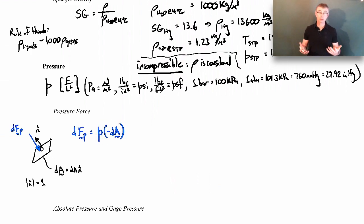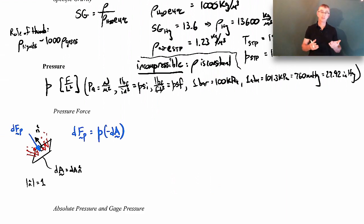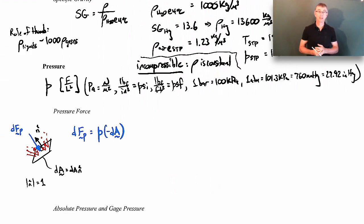Why does pressure act inward? Because you have molecules bouncing against the surface. Air molecules are constantly moving and when they impact the surface there's a momentum exchange — a force from the wall acts on the molecules, and by Newton's third law the molecules exert an equal and opposite force on the wall. It's the same idea as holding a shield while someone throws tennis balls at it; the impacts feel like a force.